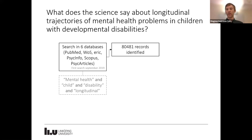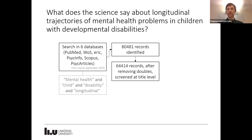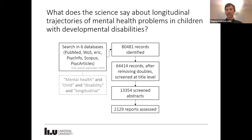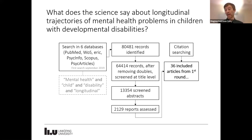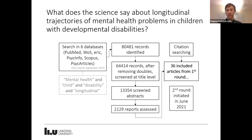We had the usual process of screening and filtering out the relevant studies. We started out with about 80,000 records and ended up with 36. We also had other smaller streams where we screened for possible studies to include in the review, such as going through citations. This was only the first round of the first search — we have to do a new one, which we are currently working on, as it's been more than two years since the first search.